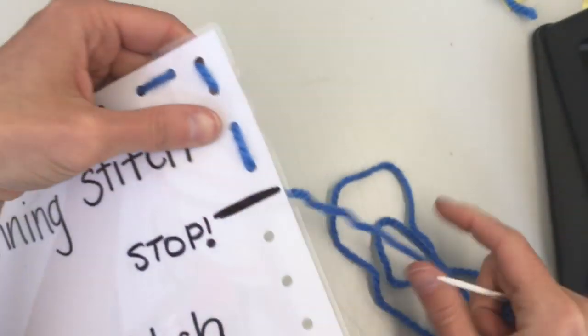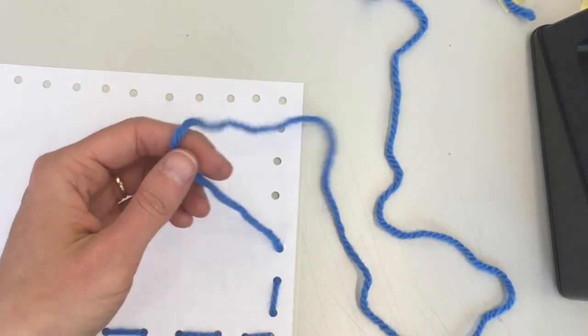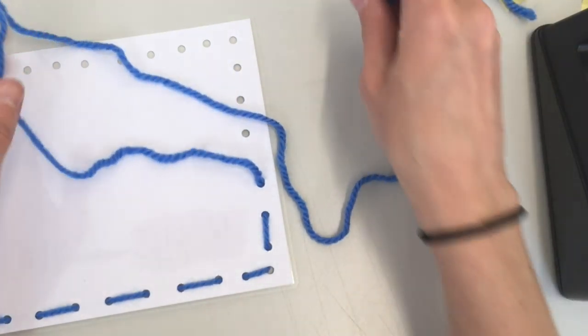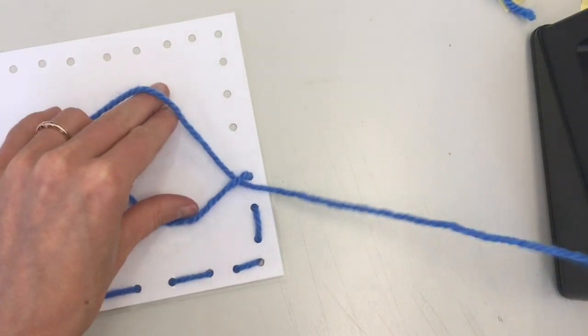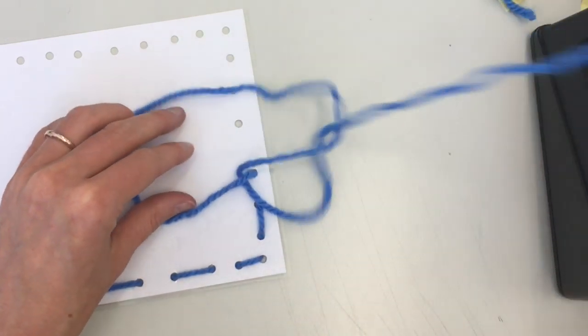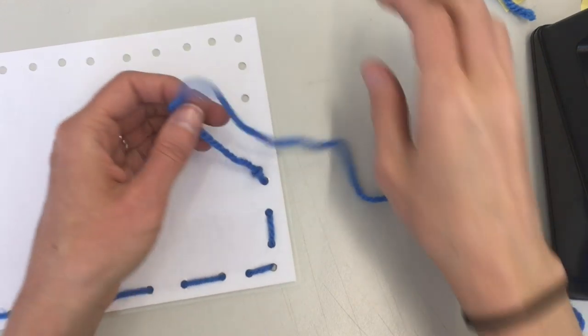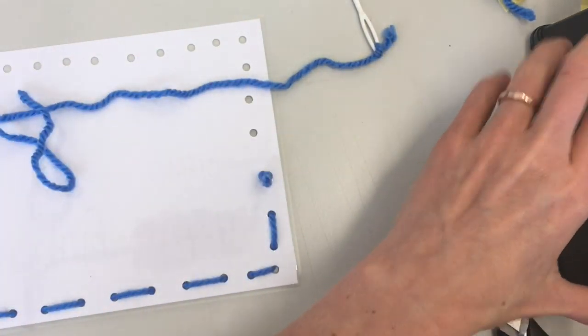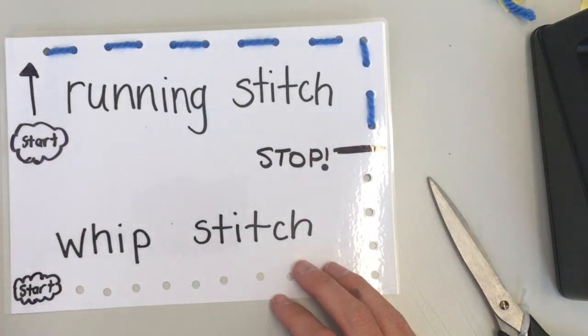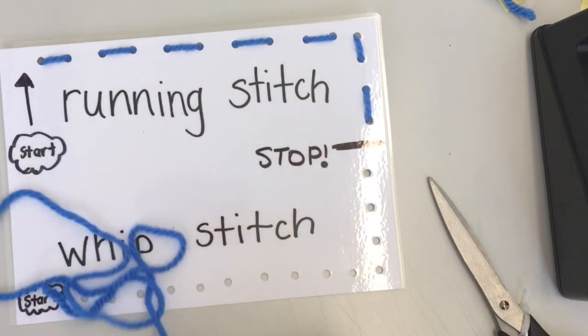When you reach the stop line, you're going to need to cut the yarn and tie a knot. It's easier to tie a knot with the needle on, so I just make a loop with my hand and then pull the needle towards me through that hole. Then my knot has tied, and I can tape my yarn to the page just to secure it. There you have the running stitch. It goes in and out of the holes in a straight line.